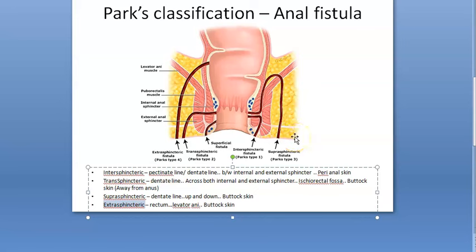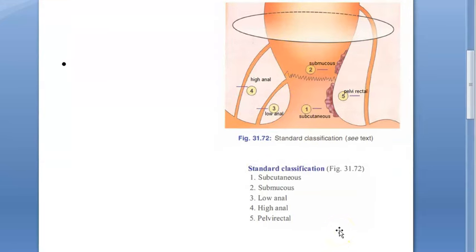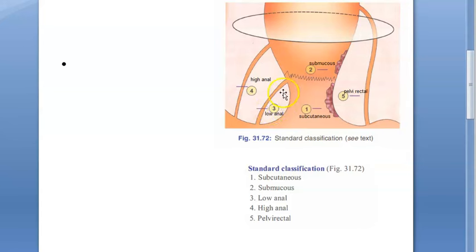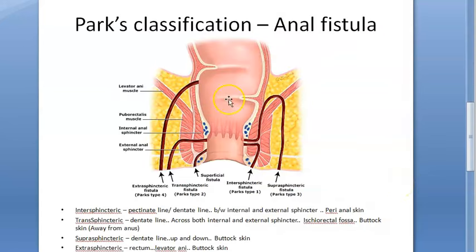There is also an older standard classification that is no longer widely used. It includes: subcutaneous (just below the epidermis and dermis), submucous (involving mucosal lining, so inside the rectum), low anal, high anal, and pelvi-rectal — which is similar to extrasphincteric and not related to the anus. This classification is not used much; Parks' classification is what you need for exams.